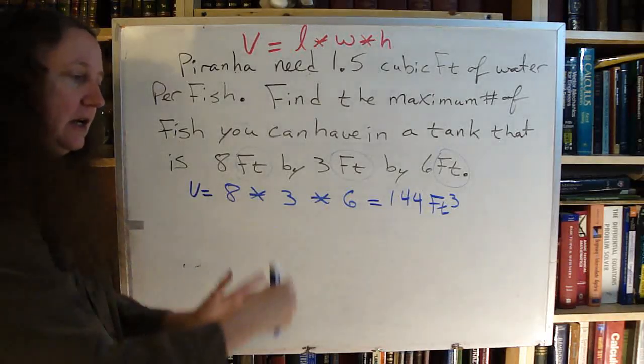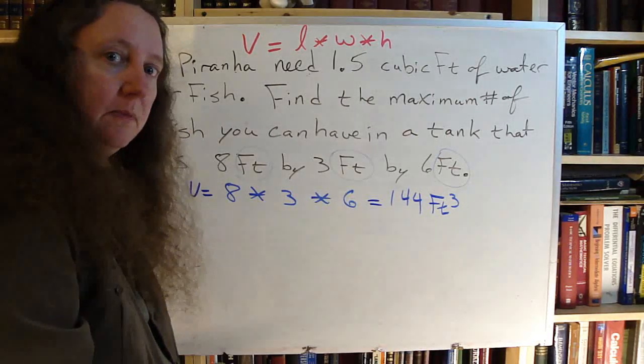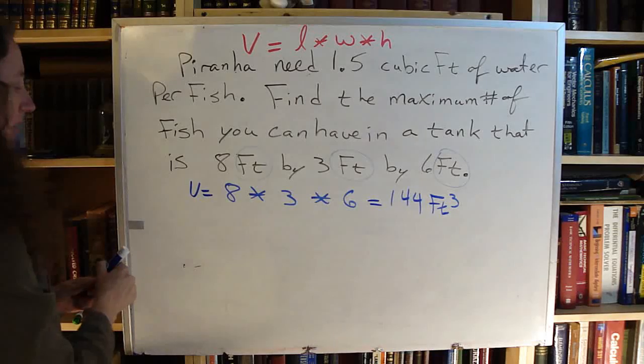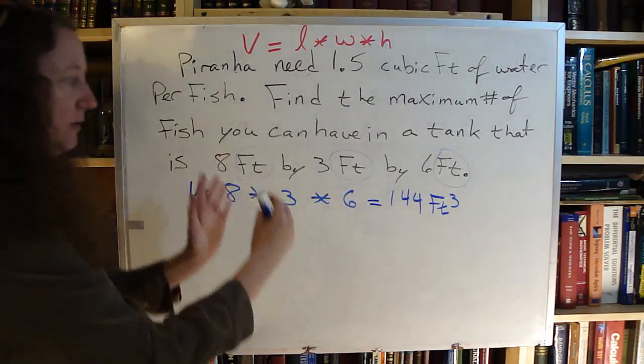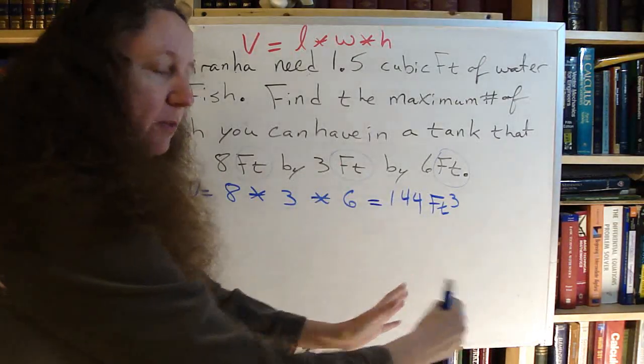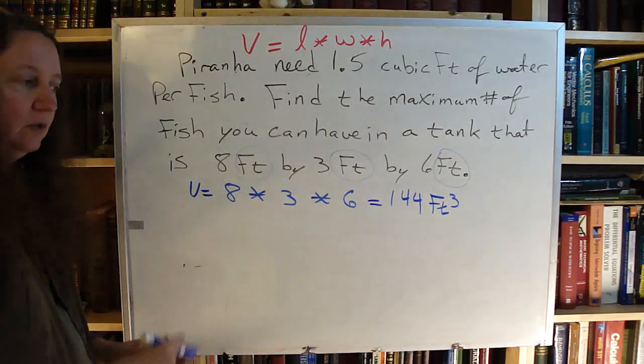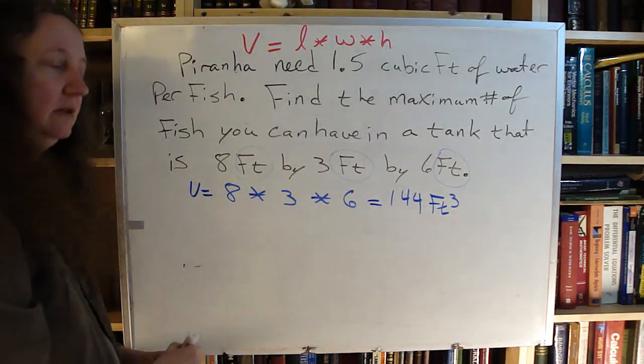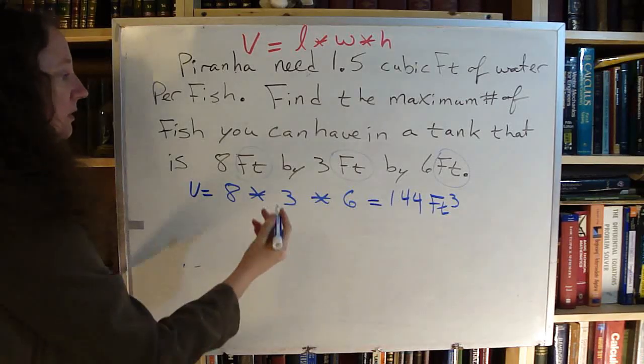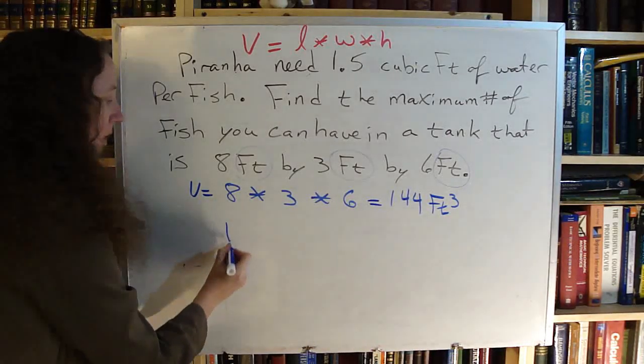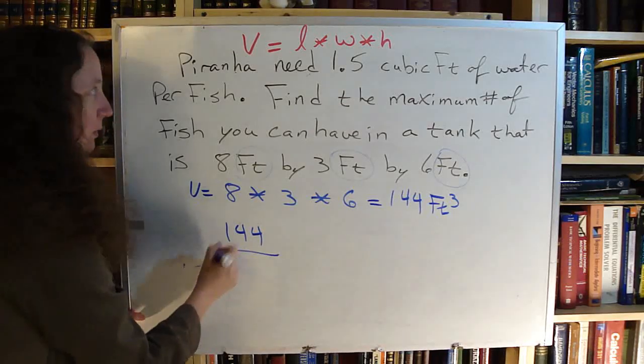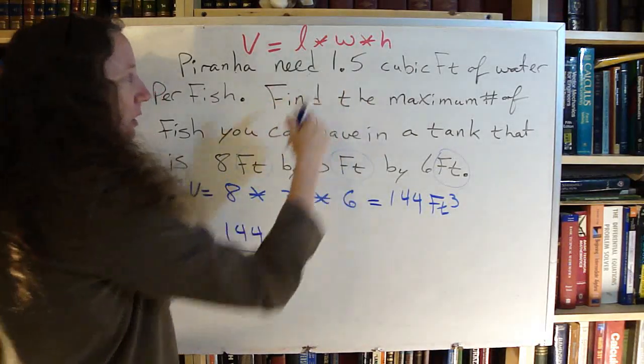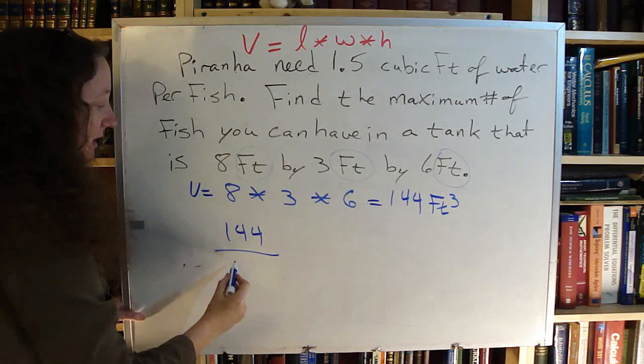Each one of these piranha needs 1.5 cubic feet. So I need to split it up for each piranha. So one gets 1.5, another gets 1.5, another gets 1.5. So I'm breaking it up into pieces, splitting it, dividing it. So I am going to take my 144 and I'm going to divide that by 1.5 cubic feet each.